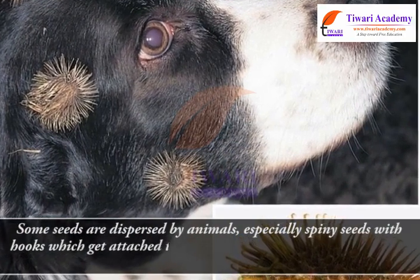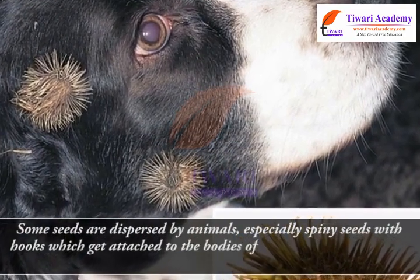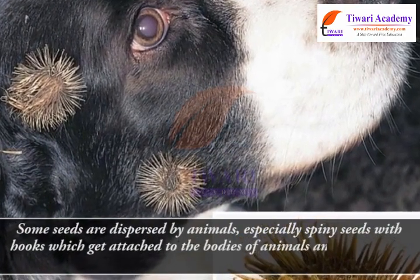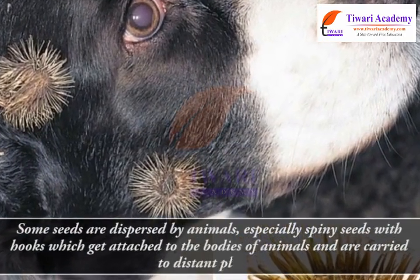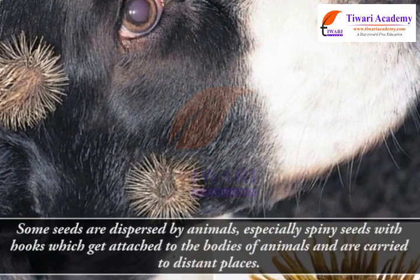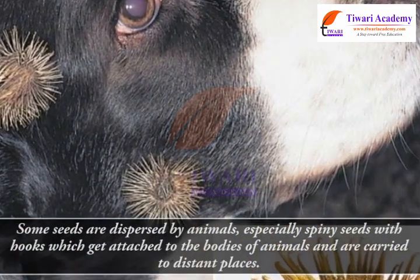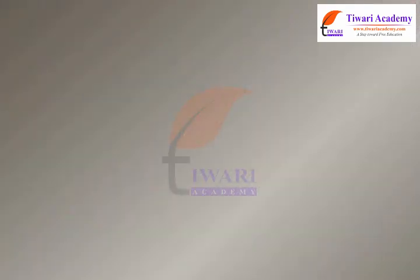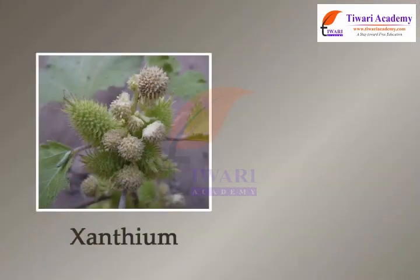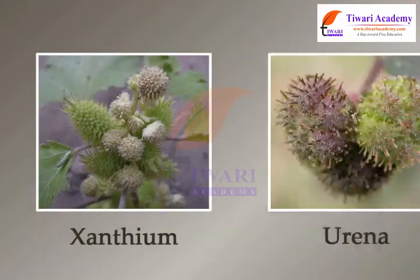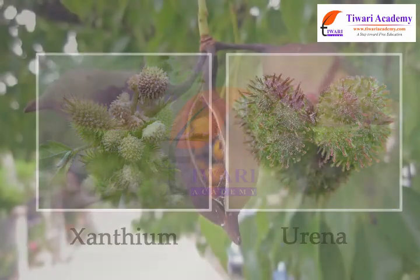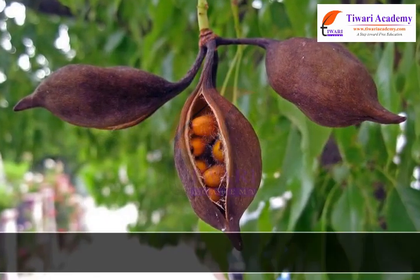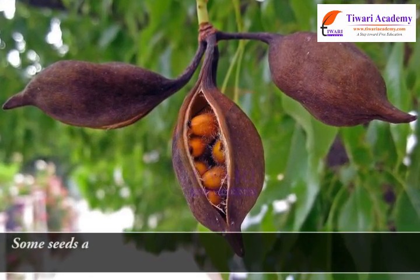Spiny seeds with hooks get attached to the bodies of animals and are carried to distant places. Examples of such seeds are xanthium and urina.